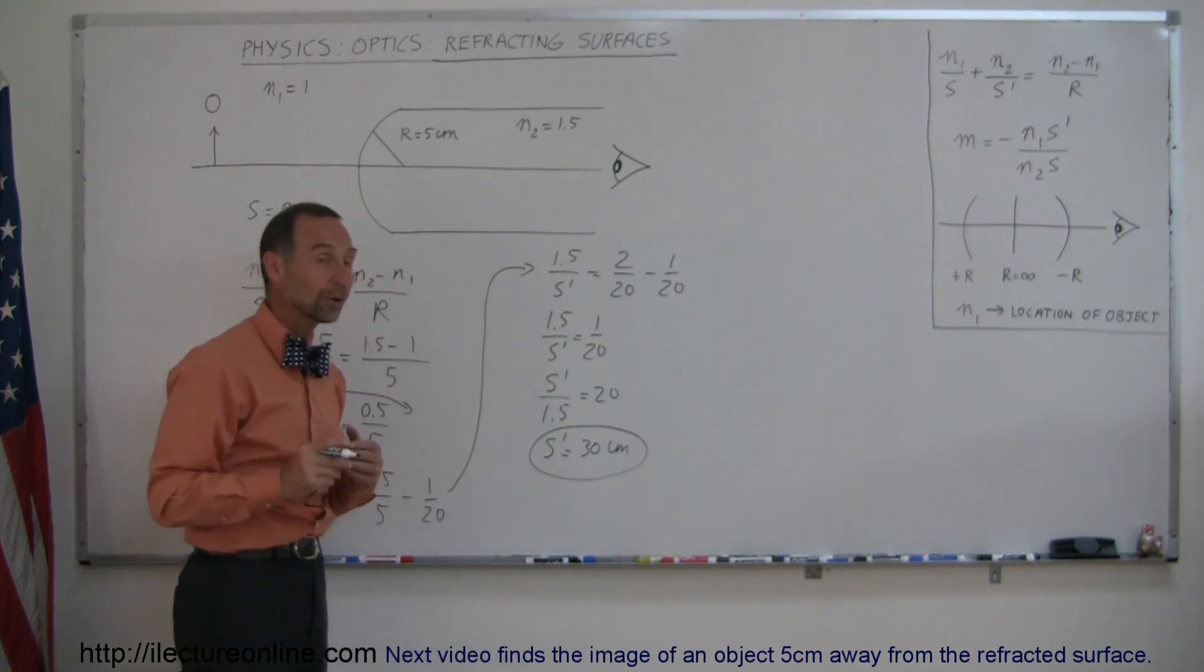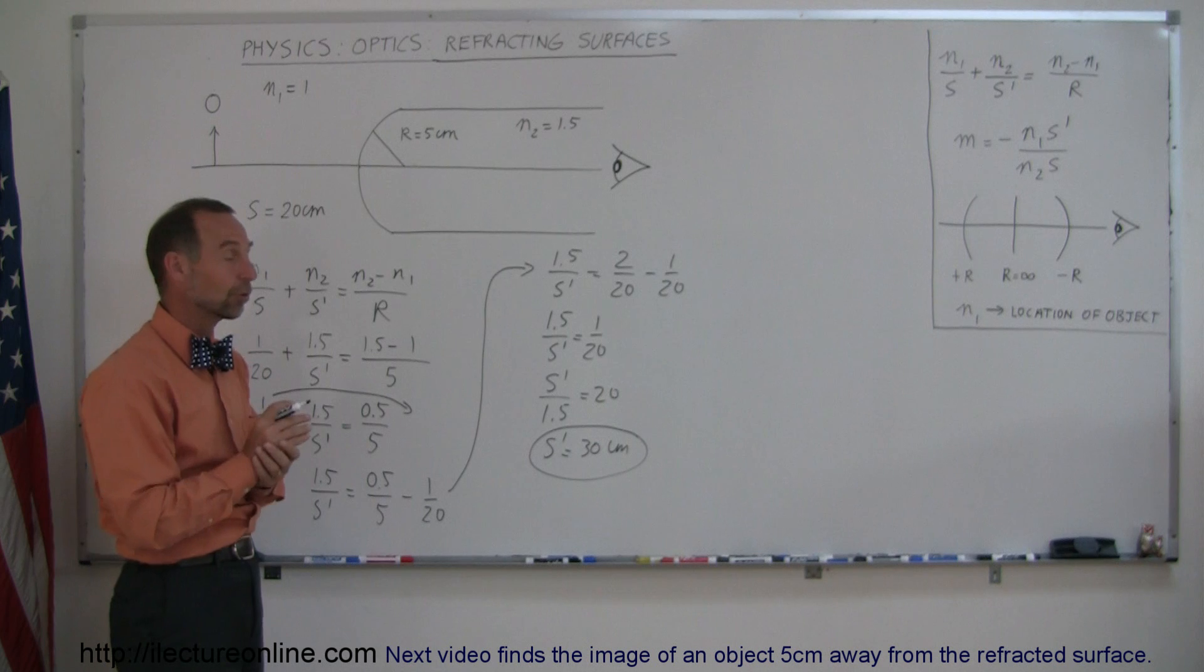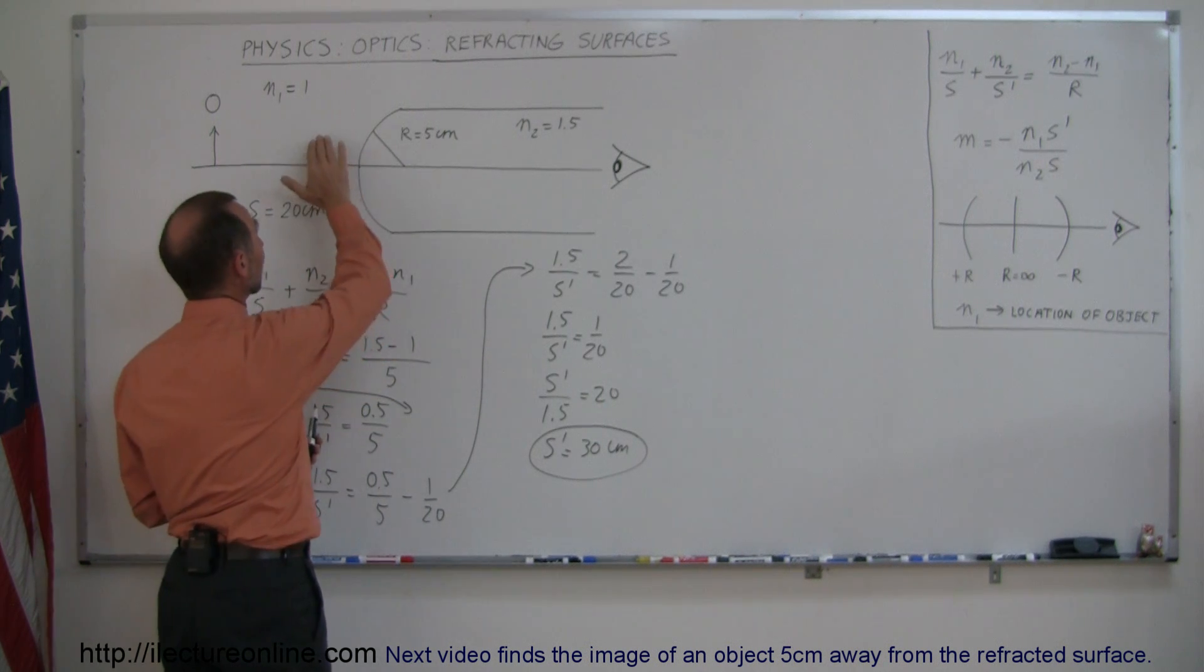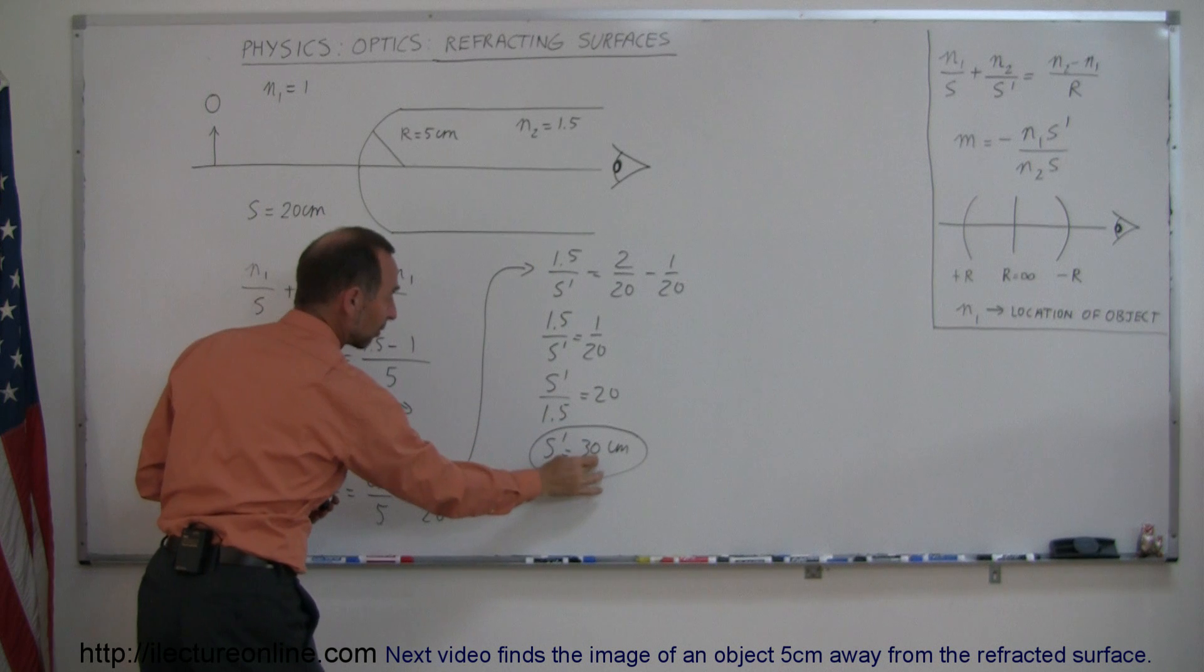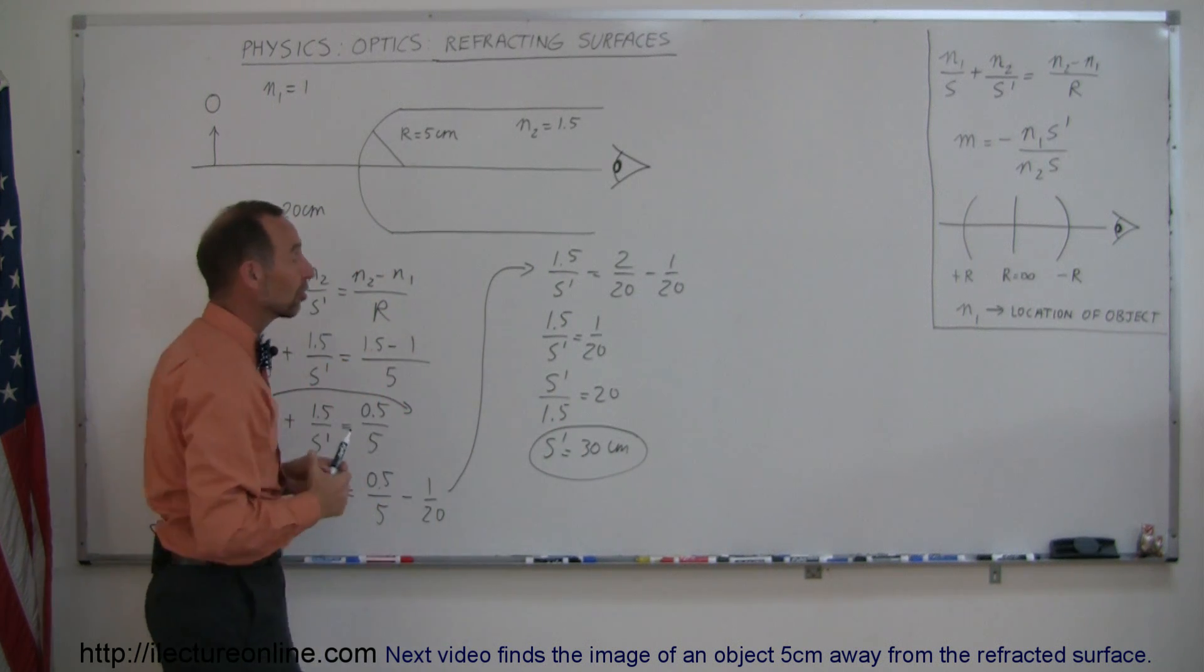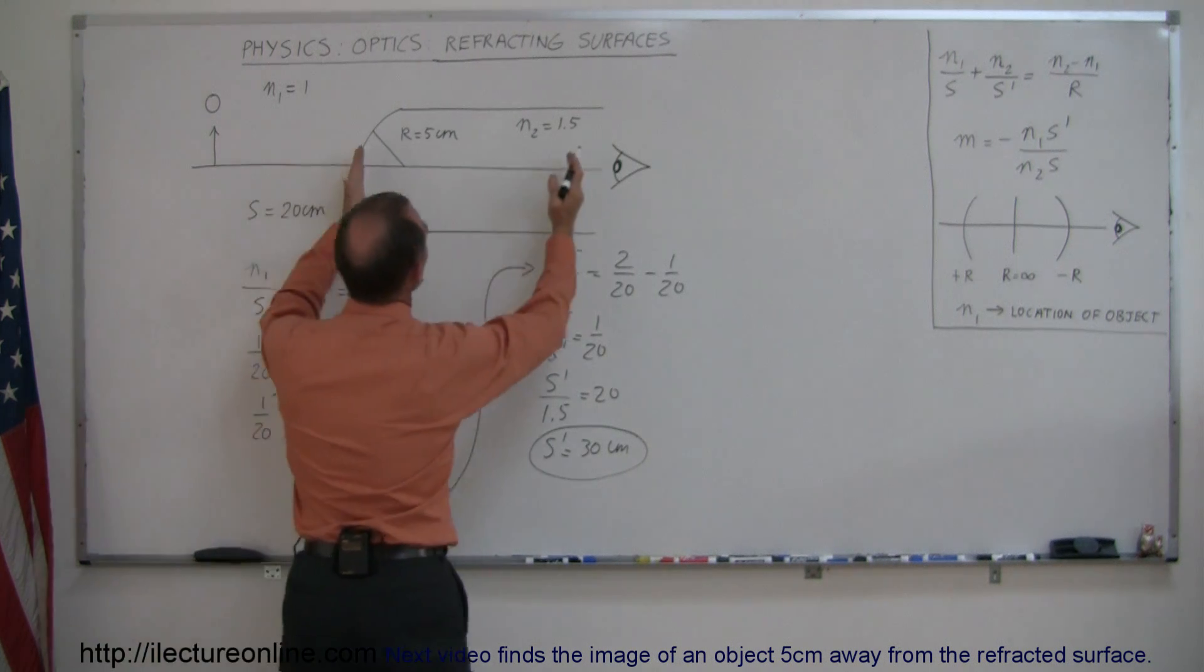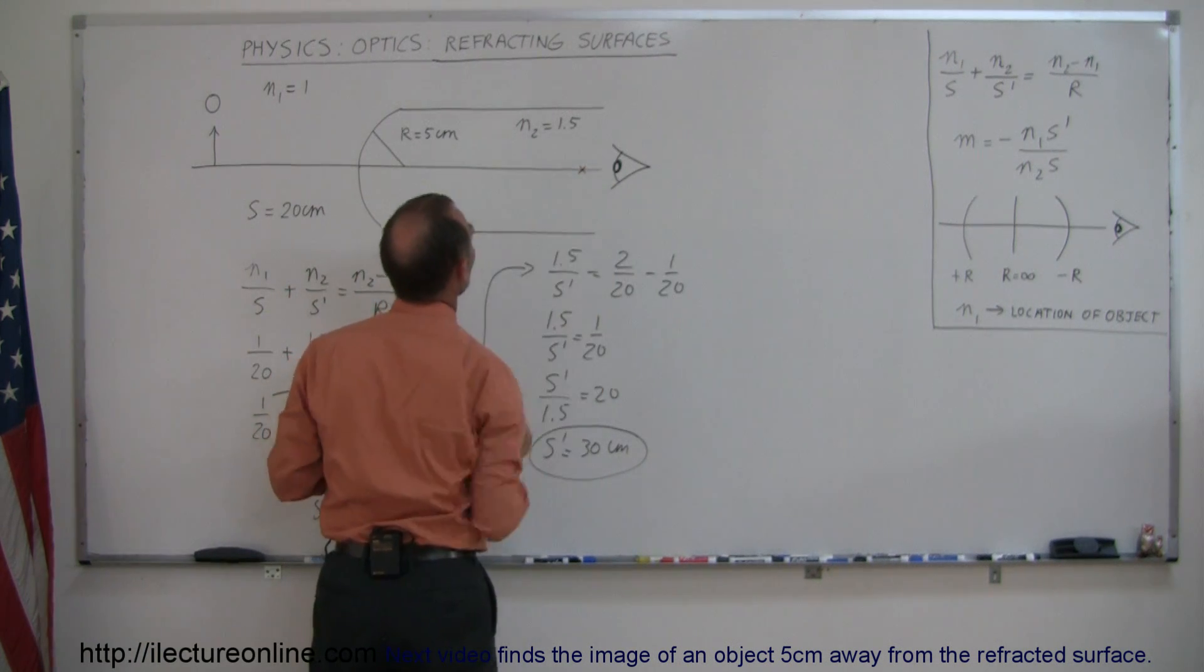All right, what does that tell us? Well, we know that it's 30 centimeters away from the boundary, but is it on the left or the right side? Well, since it's a boundary from air to glass, if it's a positive quantity here, positive S prime, a positive image distance, that means it's on the other side of the boundary. So this is 20 centimeters, and this is 30 centimeters, so it's somewhere around there.